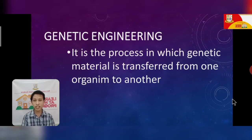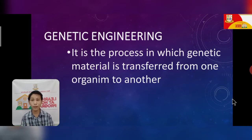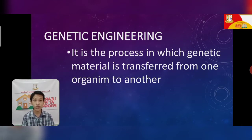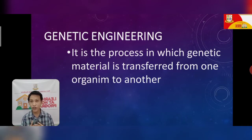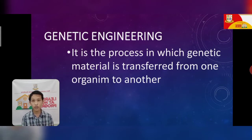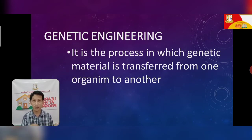Genetic engineering is the process in which genetic material is transferred from one organism to another. This is one way to multiply organisms by getting one trait from one organism and transferring it to another organism. For example, we see this in sci-fi movies — if we want to become strong or have wings, we take that trait from one animal and insert it into a human body, and then they have wings.